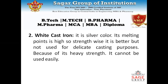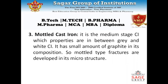It is not easy to change the shape of white cast iron. Mottled cast iron is a medium state of cast iron and has properties between grey cast iron and white cast iron — it is a mixture of both. There are small amounts of graphite, and a mottled-type structure can be developed in its microstructure.